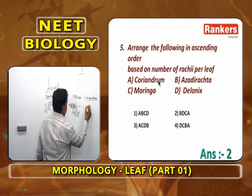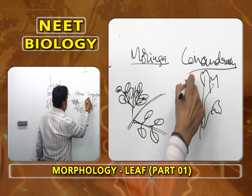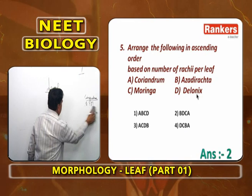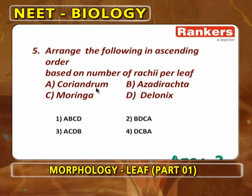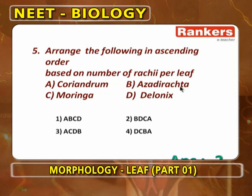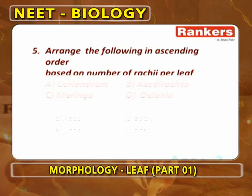Based on the number of rachises: Azadirachta has 1, Delonix has 2, Moringa has 3, and Coriandrum has many. So arranged in ascending order, the answer is B (Azadirachta), D (Delonix), C (Moringa), A (Coriandrum).